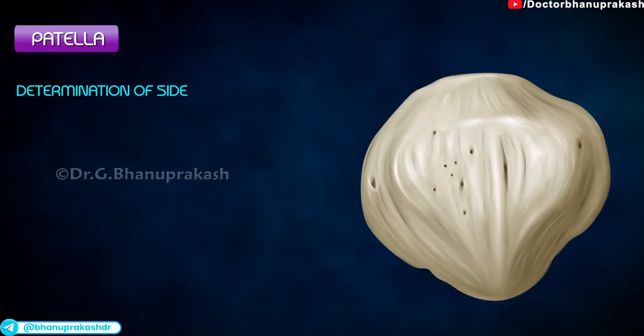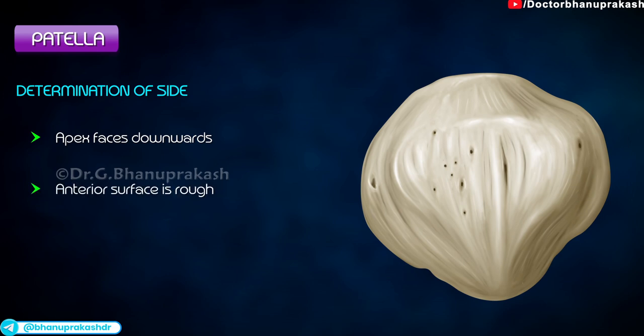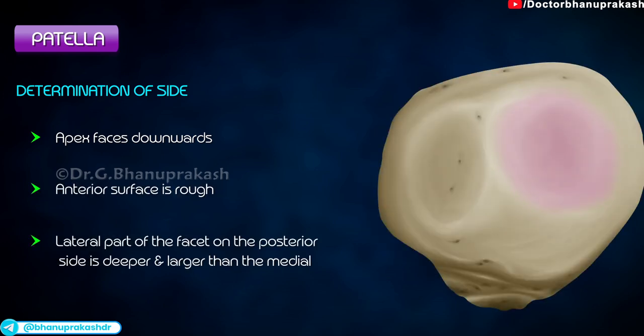Determination of the side. The apex faces downwards. The anterior surface is rough. The lateral part of the facet on the posterior side is deeper and larger than the medial.